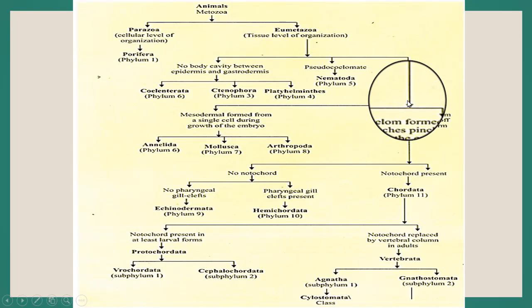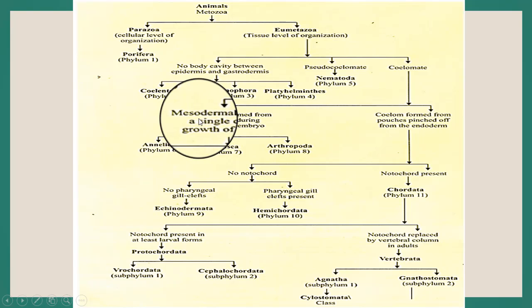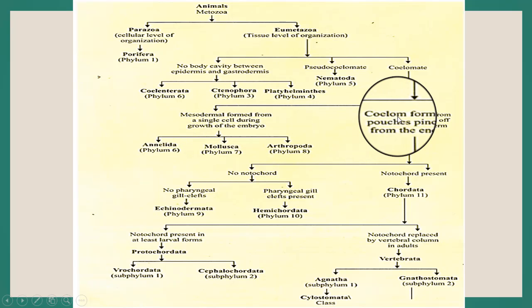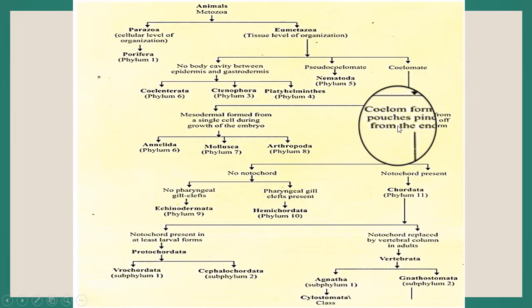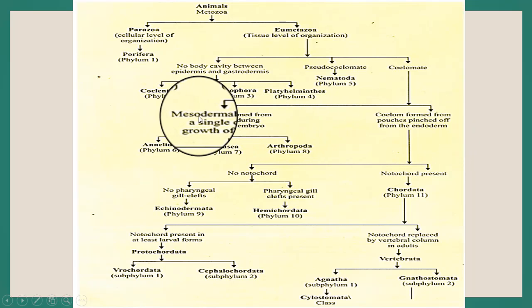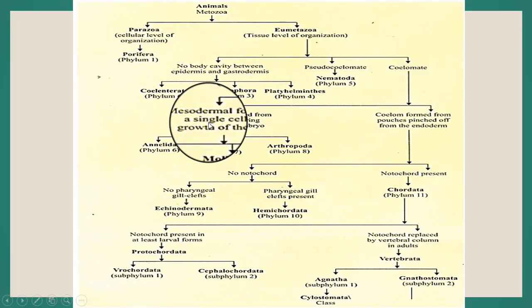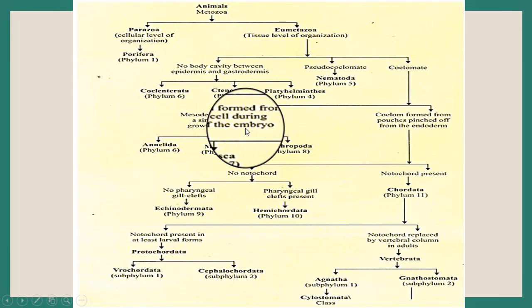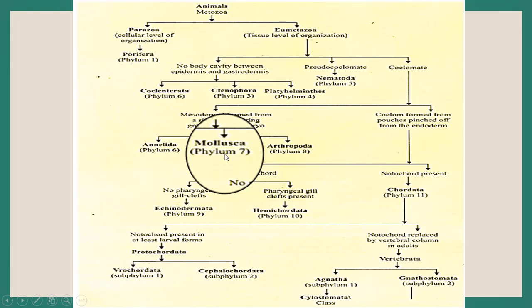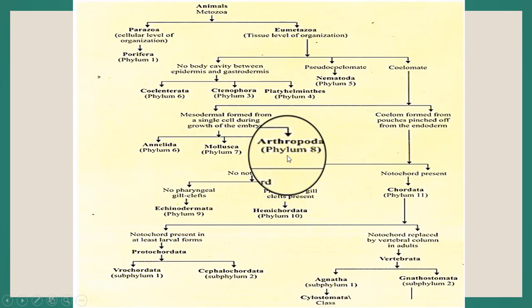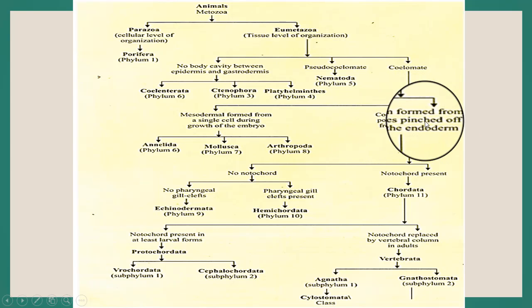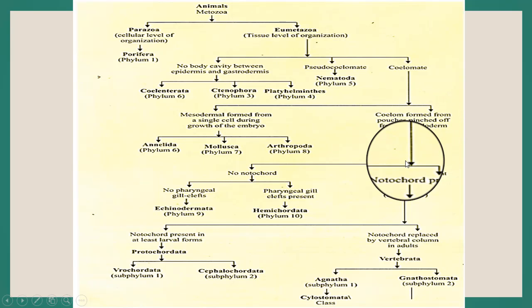The third subtype of Eumetazoa is coelomites, which are further divided into two subtypes: first, mesoderm formed from a single cell during growth of the embryo; and second, coelom formed from pouches pinched off from the endoderm. The first subtype of coelomites contains Phylum 6 Annelida, Phylum 7 Mollusca, and Phylum 8 Arthropoda.